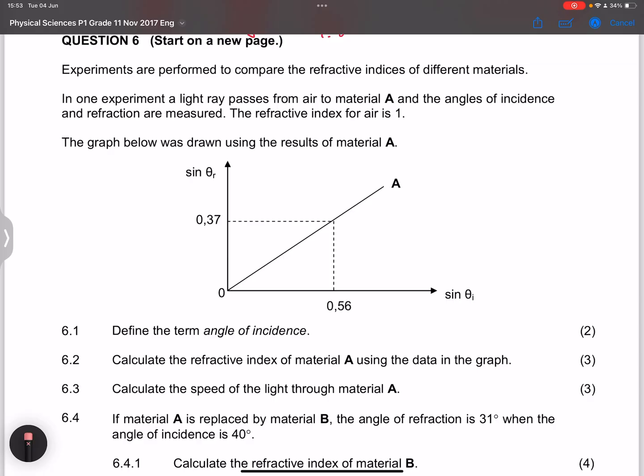So they say calculate the refractive index of material A using the data in the graph. So what we can do is, of course, we can use Snell's law. So that's the first option. So we can say that if I take from Snell's law, the refractive index multiplied by the sine of the incident ray.